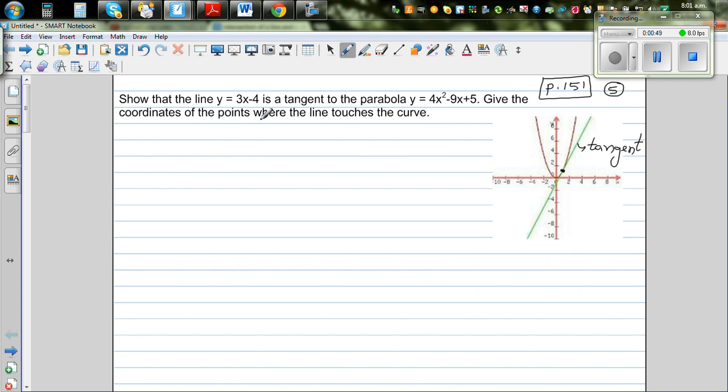You want to find the point of intersection. Let me write the equation. Y equals 3x minus 4, and you've got y equals 4x squared minus 9x plus 5. For point of intersection, you can equate this with this.